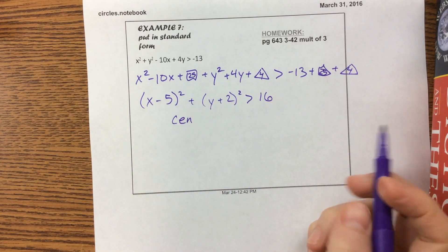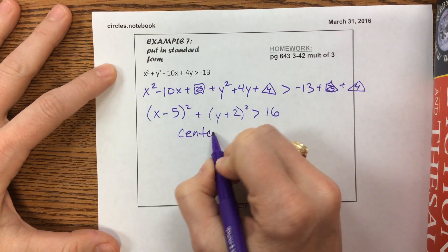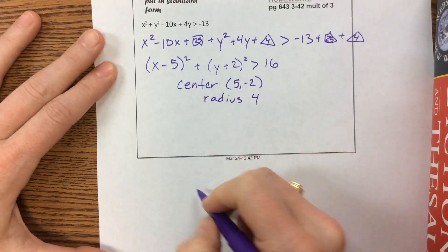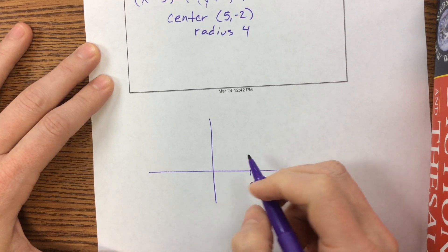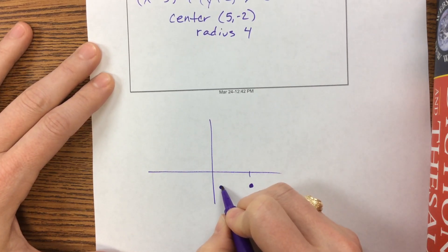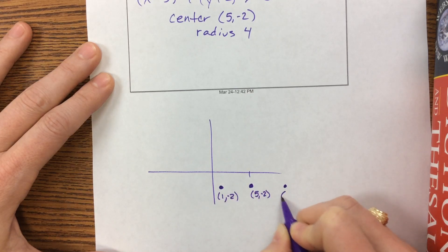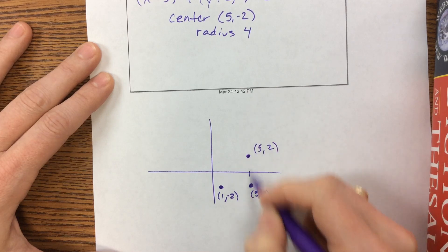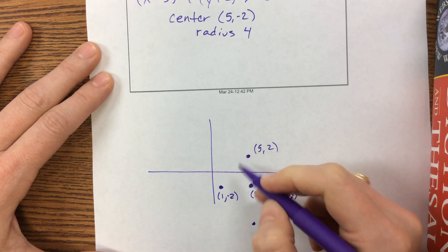We should graph this because the inequality makes it different. The center is at 5, negative 2. The radius is 4. So the center is at 5, negative 2, and if I subtract 4, I'm at 1, negative 2. Add 4, I'm at 9, negative 2. Coming up, I'm at 5, positive 2. Going down 4 more, that's 5, negative 6.